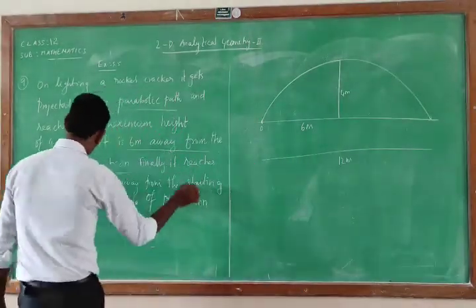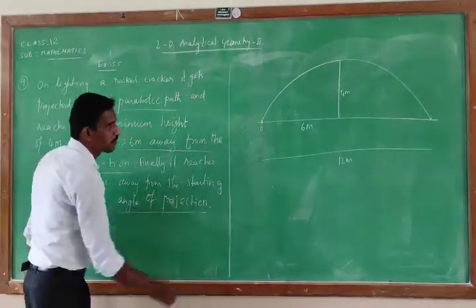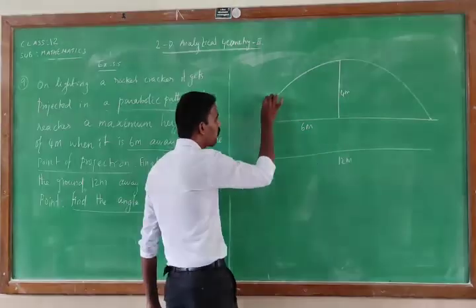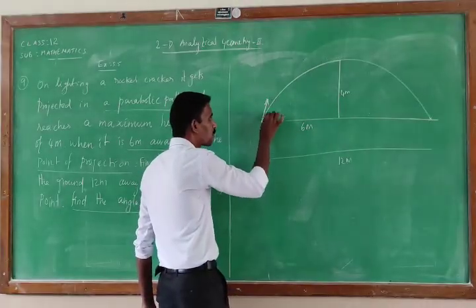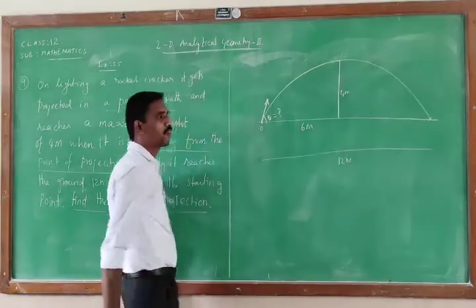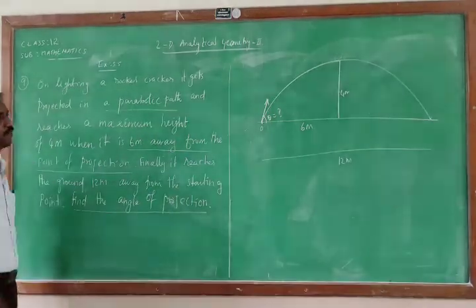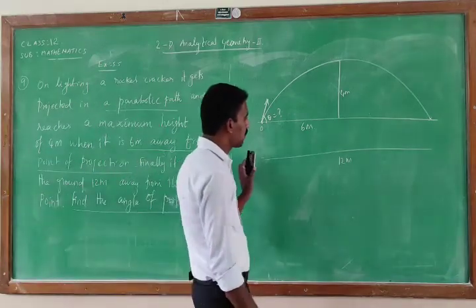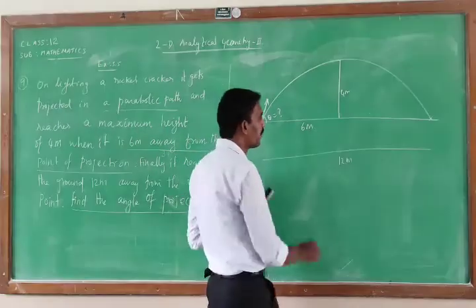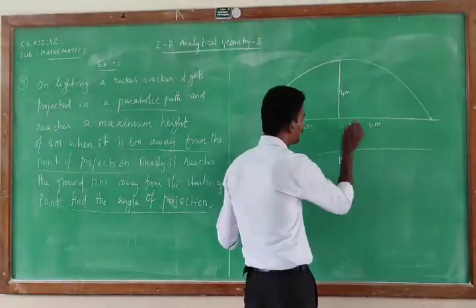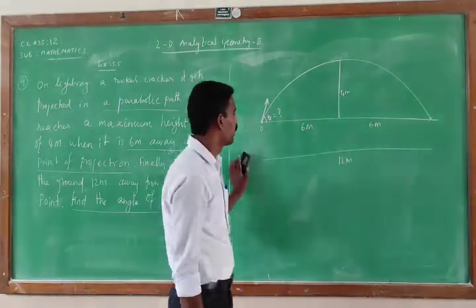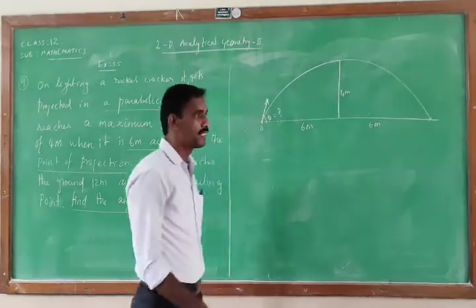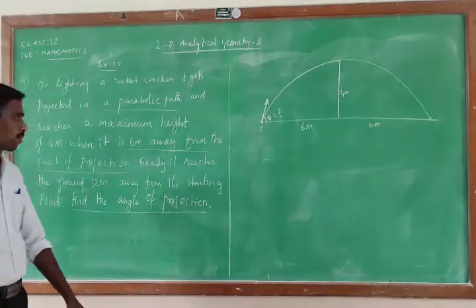The question is: find the angle of projection. Now we want to find out the angle of projection theta. The total distance is 12 meters, which will be split like 6 meters and 6 meters here. The path of projection is a parabola — we study this in physics also; the path of projection is a parabola.